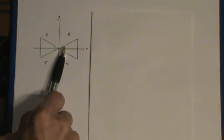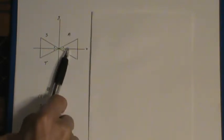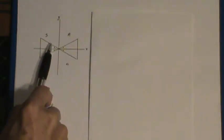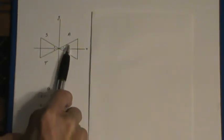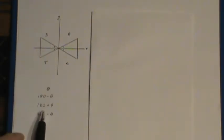If this is angle theta right here, coming around to this line, that's 180 degrees minus theta. Coming around to here, it's 180 plus theta.